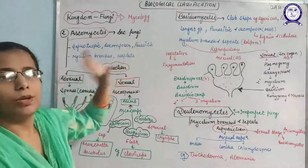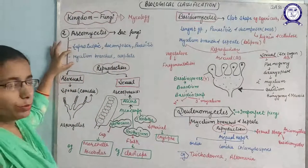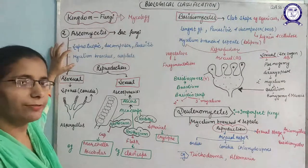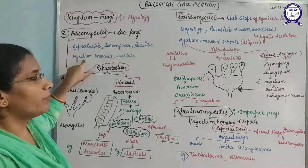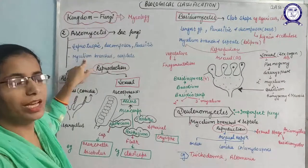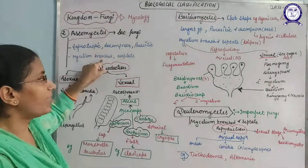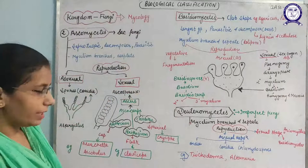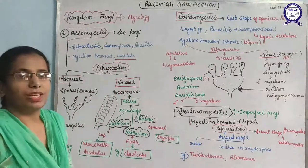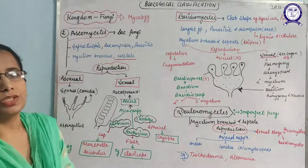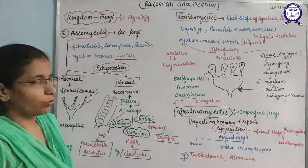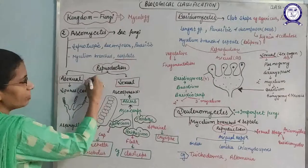In Ascomycetes, the thread-like structures forming the fungus are hyphae; these hyphae join together to form mycelium. The mycelium in Ascomycetes is branched. It does not have septa — meaning it has coenocytic or multinucleate conditions without septa.